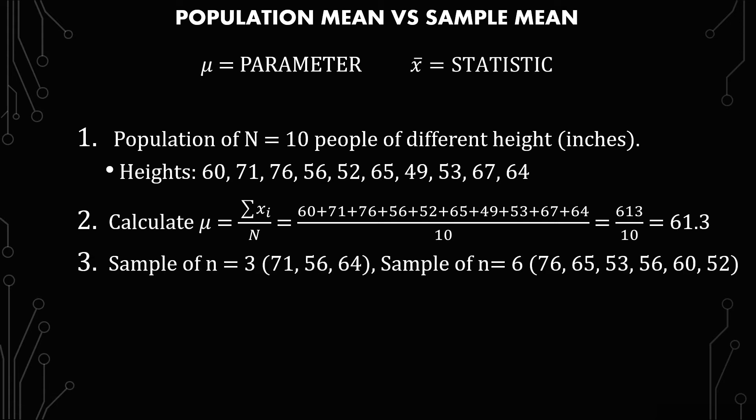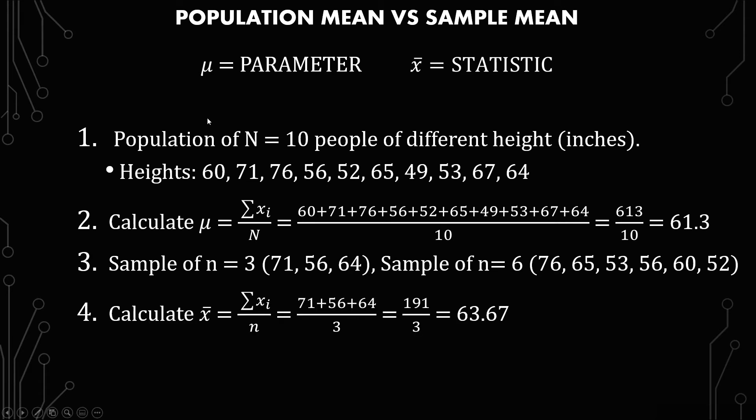When it comes to looking at samples, I'll look at two different types just to show a trend that tends to happen as you increase the sample size. The first one uses a sample of 3. When you calculate x-bar, you calculate the summation of each x, just like with mu, except you're dividing by small n — the sample size. So: 71 + 56 + 64 over 3 gives you 191 over 3, which gives you 63.67.